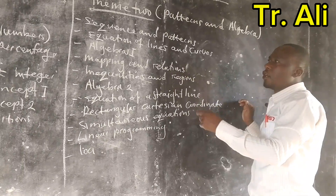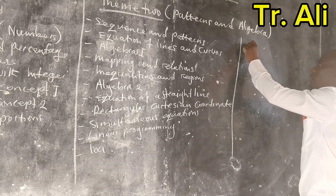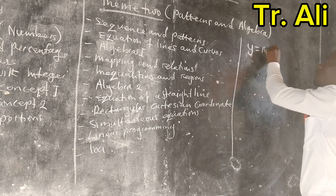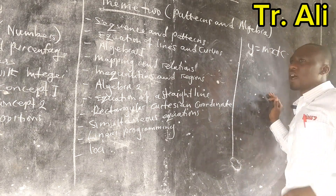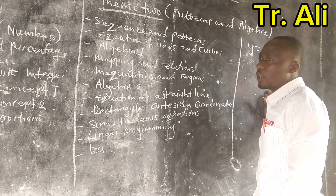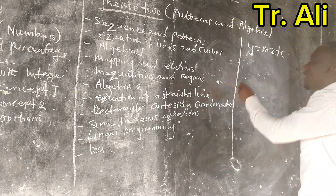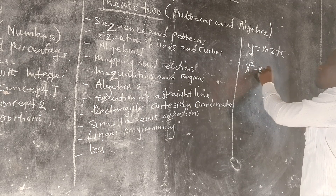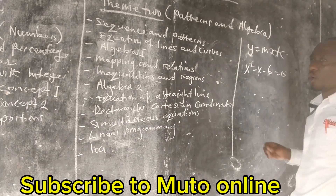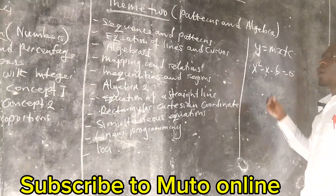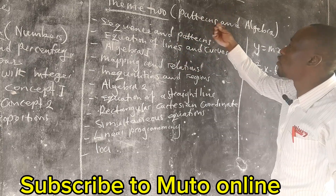Make sure that when you are there, you have to know the equation of the line, which says that y is equal to mx plus c. That is the equation of the straight line — that one falls under the linear equation. Then we also have the quadratic equation, for example, where you find x squared minus x minus 6 is equal to 0. All of these fall under topic two, that is the equations of lines and curves.